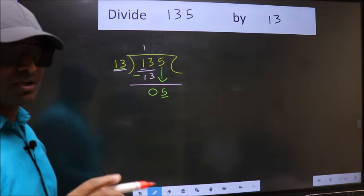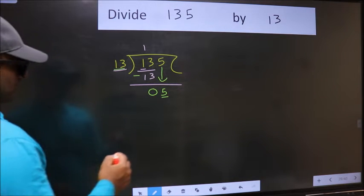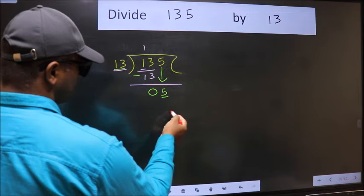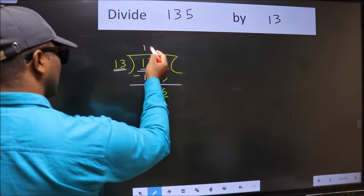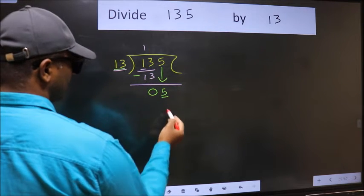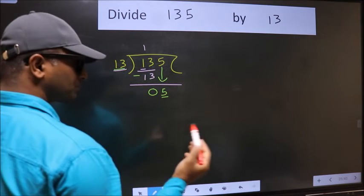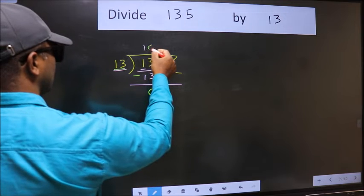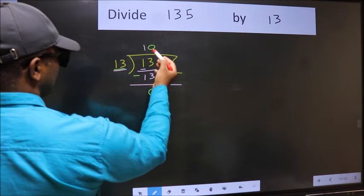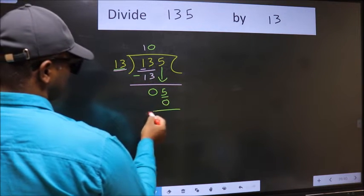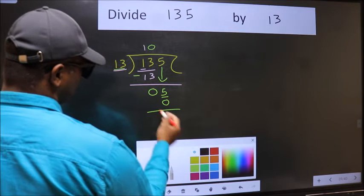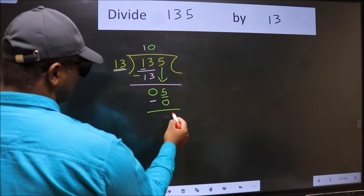Instead, what you should think of doing is, which number should we take here? If I take 1, we will get 13. But 13 is larger than 5. So what we should do is, we should take 0. So 13 into 0, 0. Now we should subtract. 5 minus 0, 5.